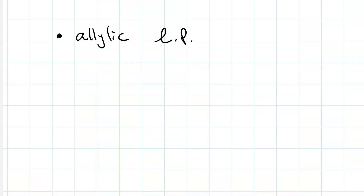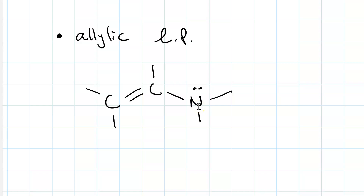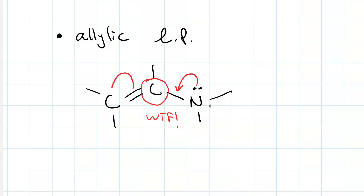Another resonance pattern is to have an allylic lone pair. Here I've drawn this with the nitrogen in the allylic position, but any atom that has the capacity to bond more than once and has a lone pair could be there — a carbanion or a neutral oxygen as well. In any case, here we're going to need two curved arrows. We're going to take that allylic lone pair and turn it into a pi bond. That exceeds the octet on the central carbon, so in order to relieve that, we need a second curved arrow that takes that pi bond and turns it into a lone pair.